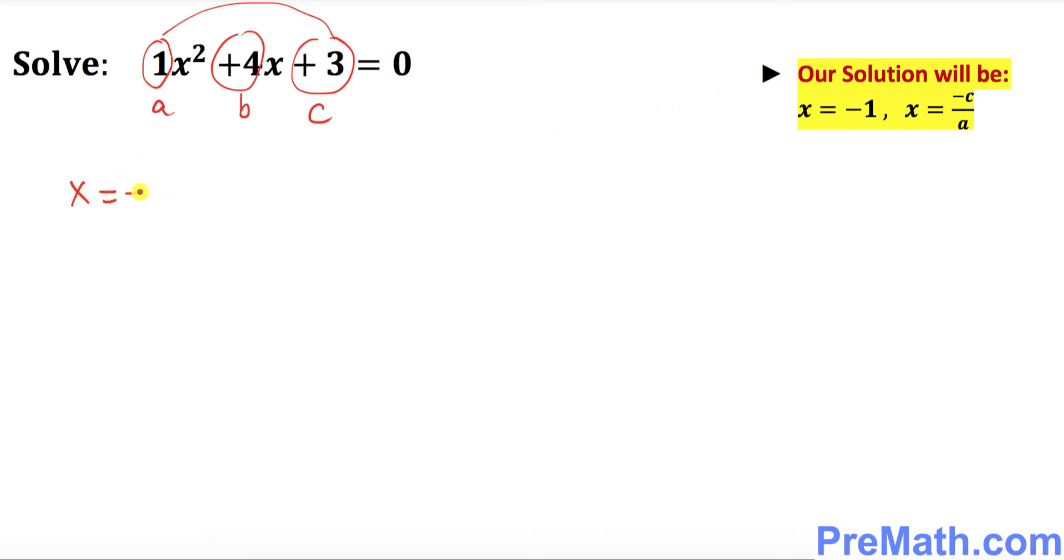So our solution is going to look like this: one of the solutions is always going to be negative 1, and the second solution is going to be negative c over a. c is positive 3, so the opposite becomes negative 3 over 1. That means x equals negative 3 is another solution.